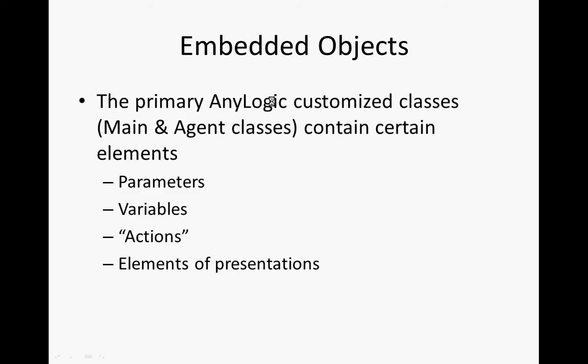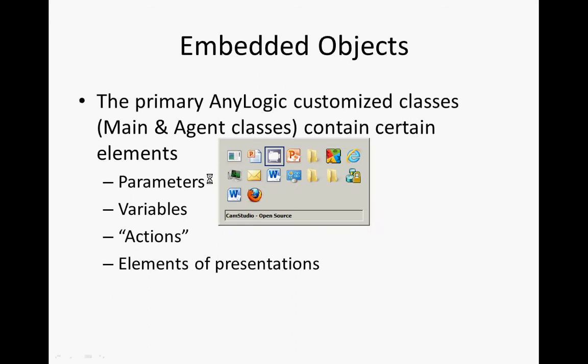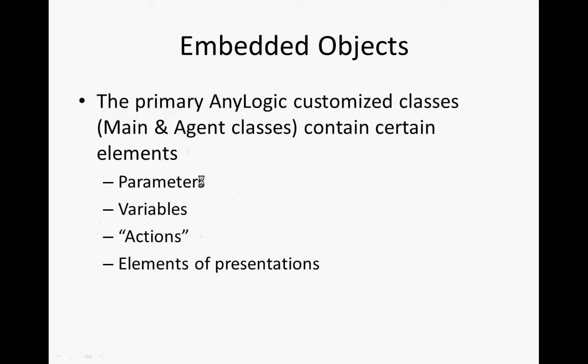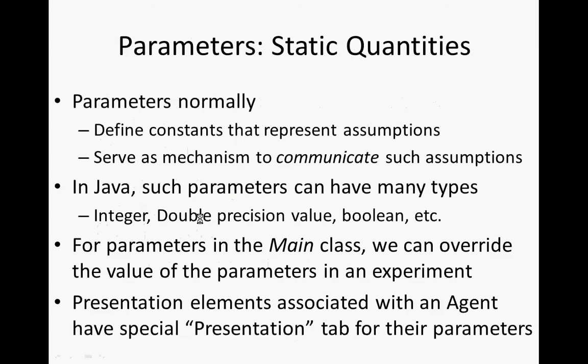Let's talk about elements of these classes. The main and agent classes can contain many elements. They're active objects, and they can contain parameters, variables, actions, elements of presentations, etc.